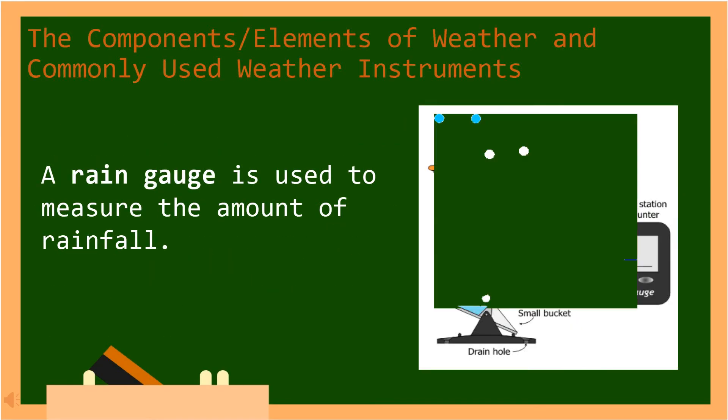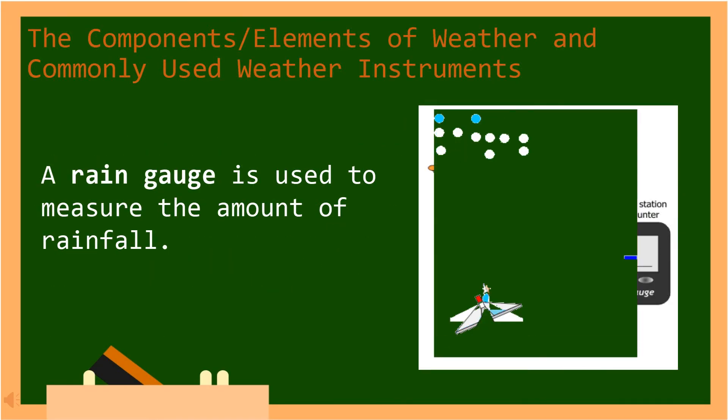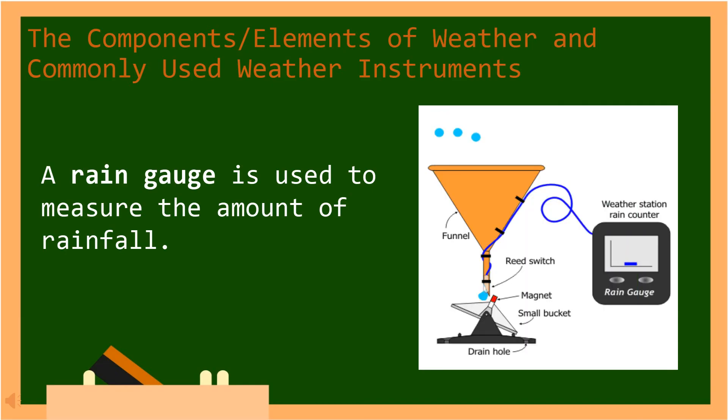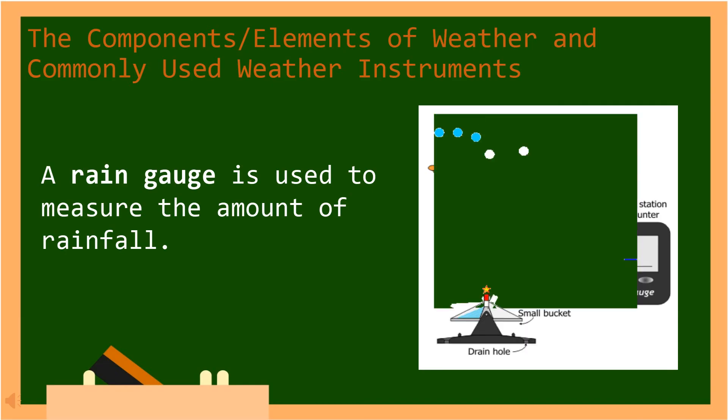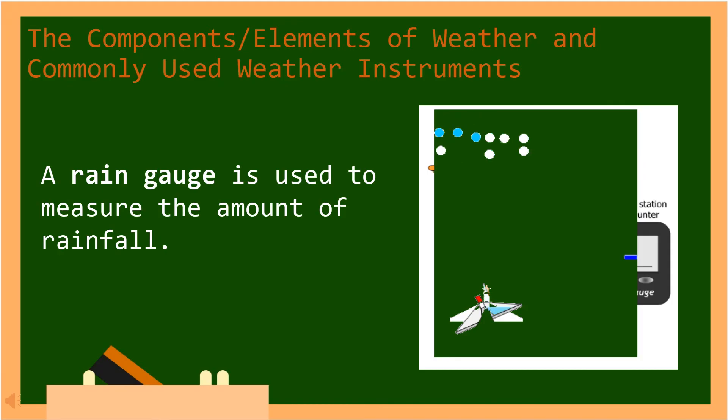A rain gauge is used to measure the amount of rainfall. In Tagalog, ginagamit ang isang gauge para sa ulan upang sukatin ang dami ng pagulan.